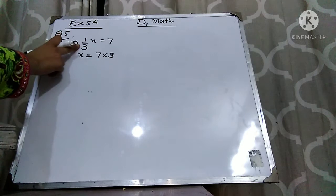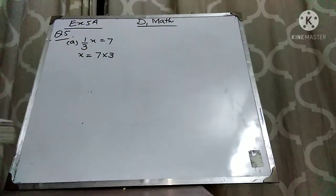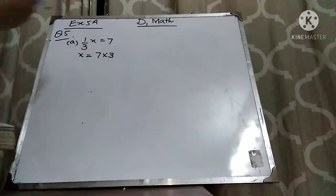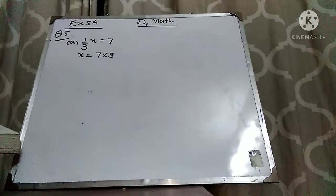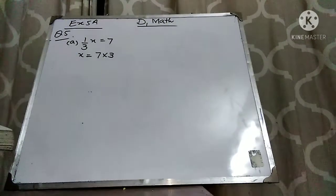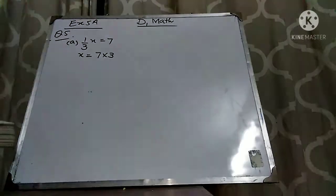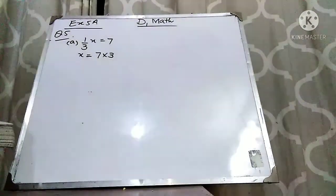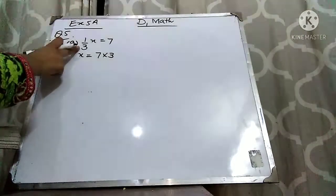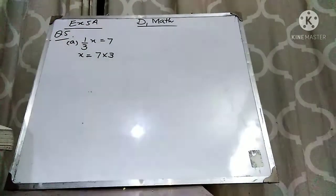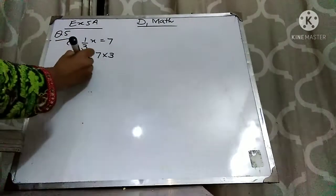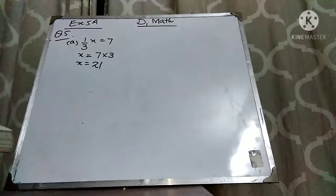And if something is dividing on one side, it will go to the other side and multiply. And if something is adding on one side, it will go to the other side and subtract. And if something is subtracting on one side, it will go to the other side and add. These are the four basic rules of the equation. So in exercise 5a, this 3 is dividing over here, so if it goes to that side it will multiply. 3 times 7 is 21. This is your answer.